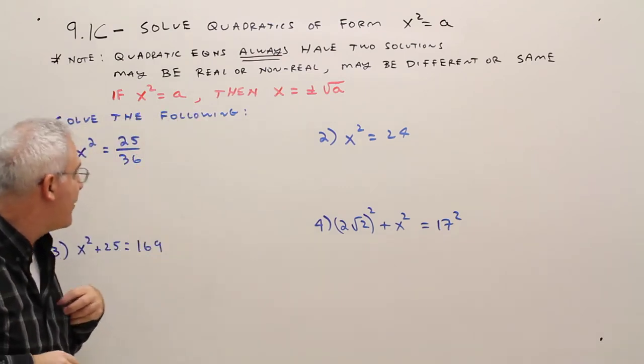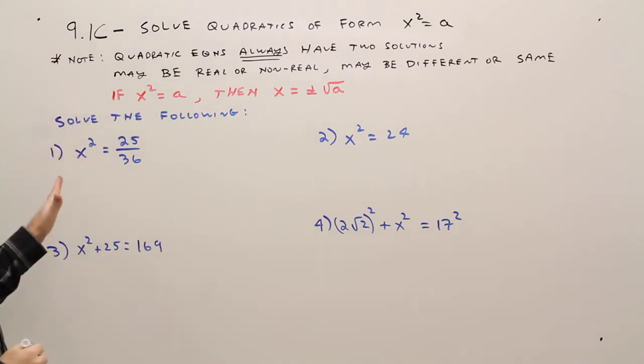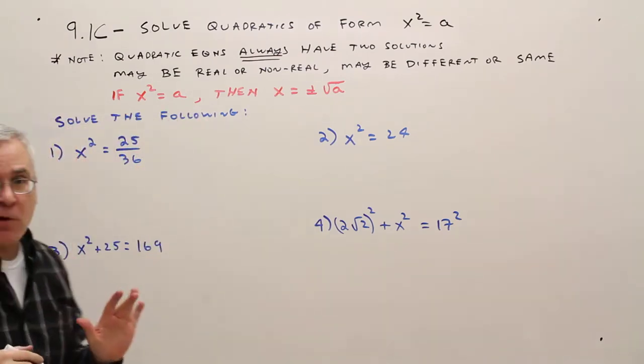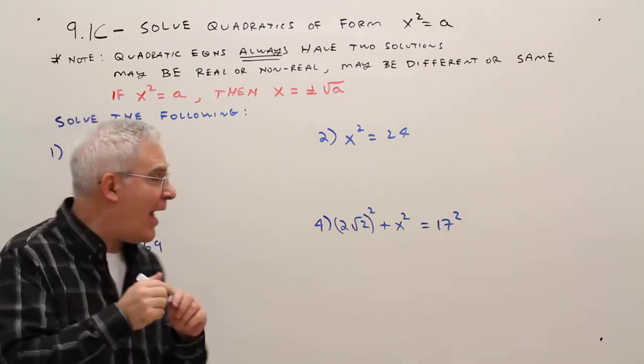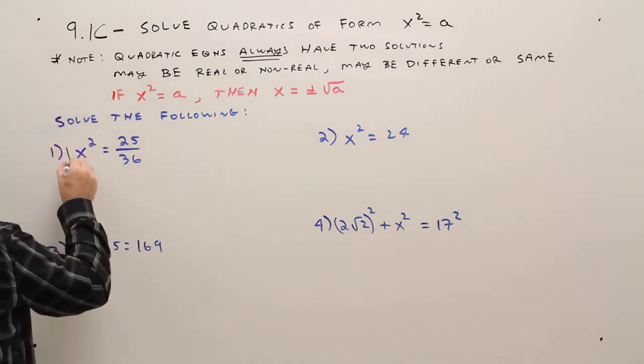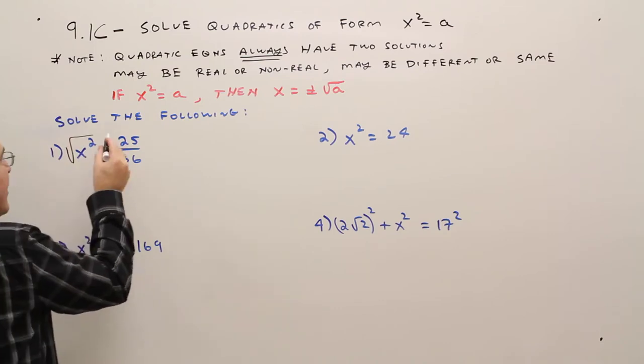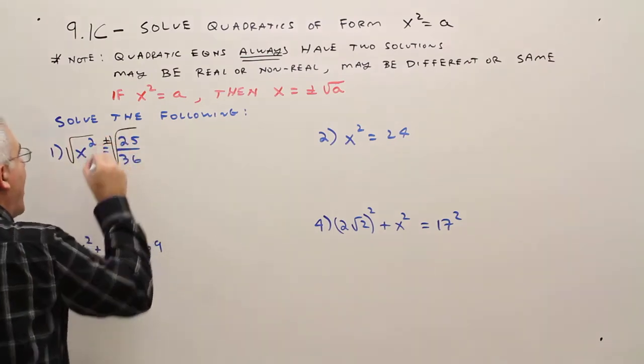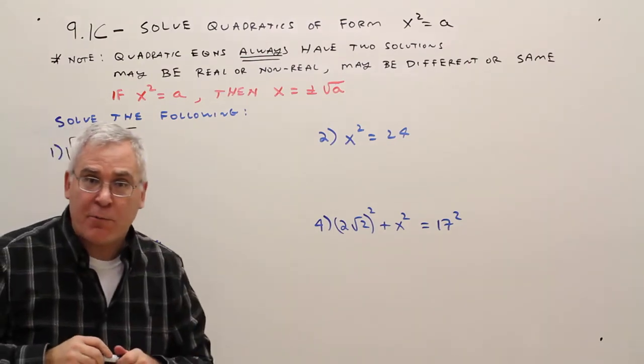I've got four examples. Solve the following. I've got X squared by itself. Whenever I see that, I just take the square root of the left side and plus or minus the square root of the right side.